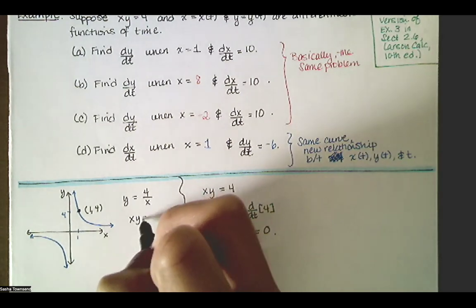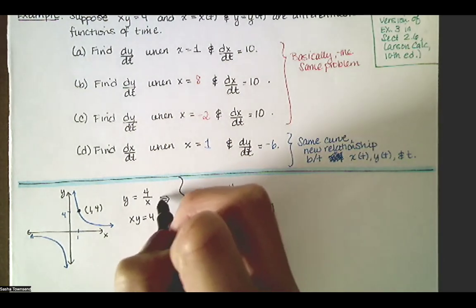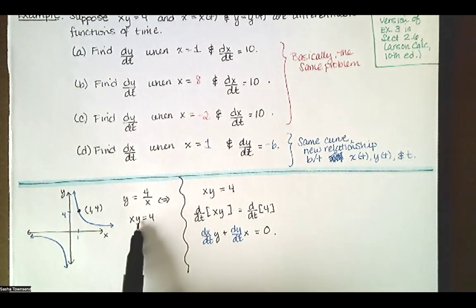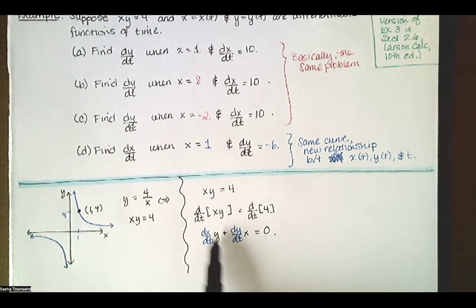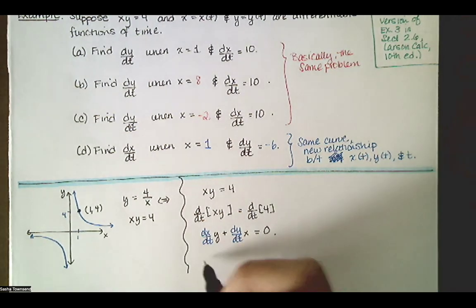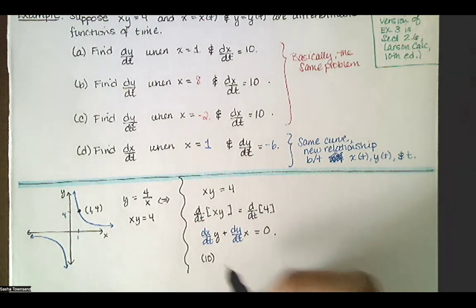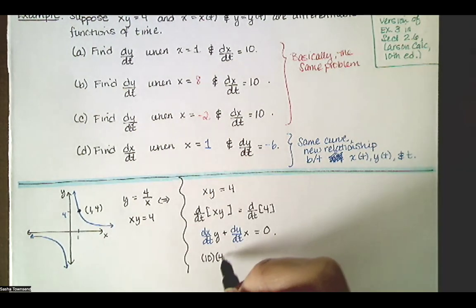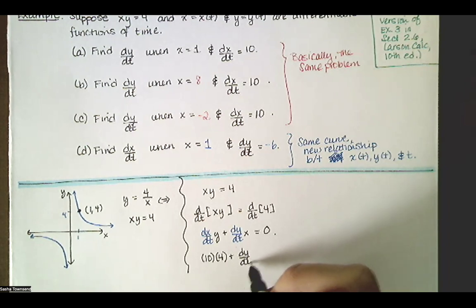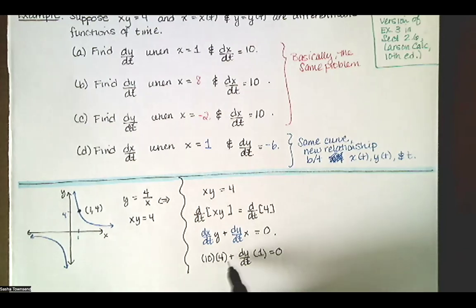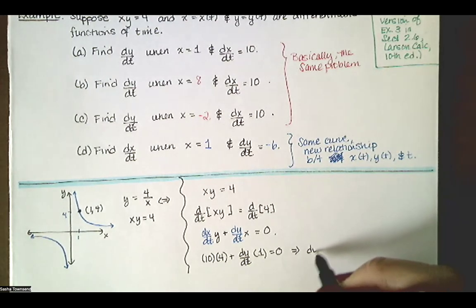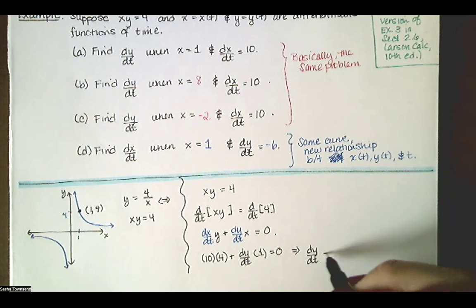Since x times y equals 4, when x equals 1, y equals 4 — so we're at that location. I know x, y, and dx/dt, so I substitute and solve for dy/dt. Since dx/dt is 10, our y value is 4, and x equals 1, we have 10 times 4 plus dy/dt times 1 equals 0. So 40 plus dy/dt equals 0, which means dy/dt equals negative 40.